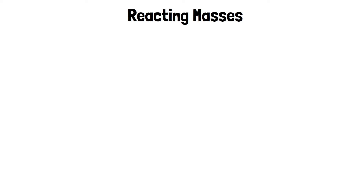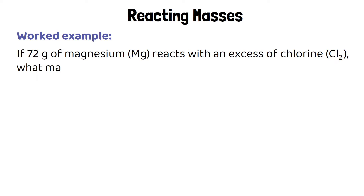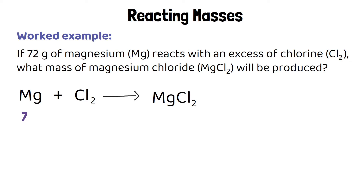You might know you have a certain mass of reactant and want to know how much product you can make. For example, if 72 grams of magnesium reacts with an excess of chlorine, how much magnesium chloride could be produced? To do these questions you'll need the balanced symbol equation for the reaction. We know we're starting with 72 grams of magnesium, we have an excess of chlorine, and we're trying to work out how much magnesium chloride can be made.